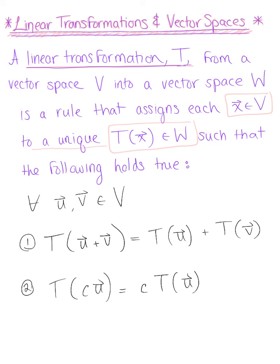So these two properties must hold true for T to be a linear transformation from a vector space to a vector space.